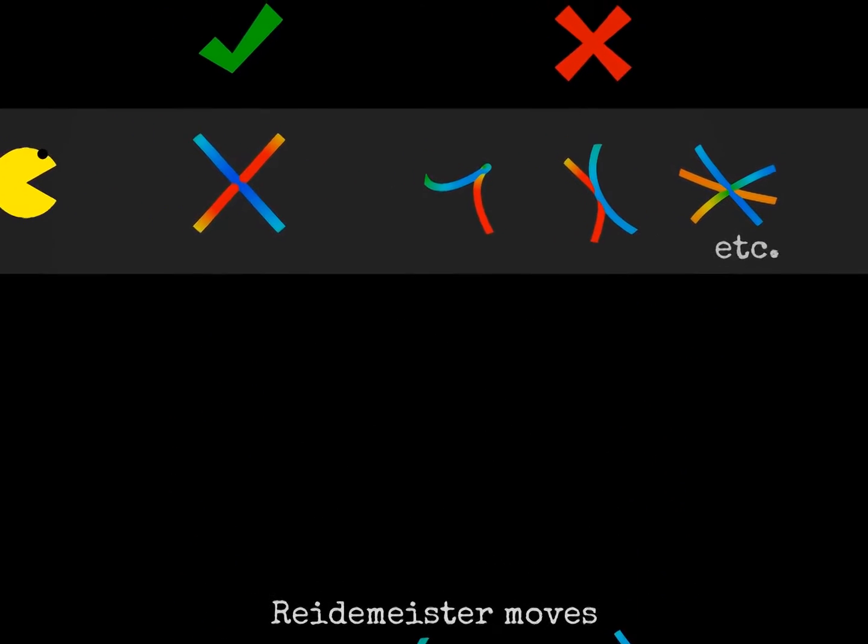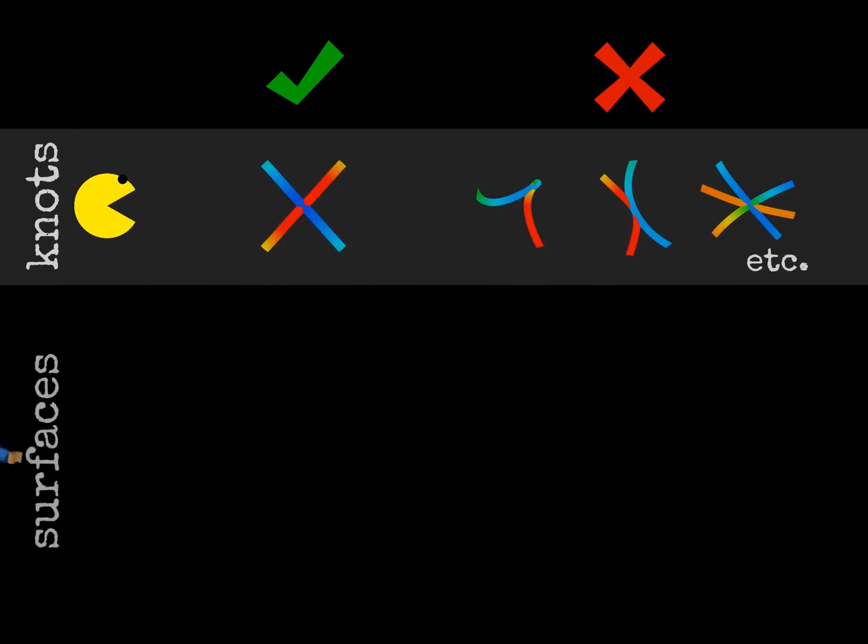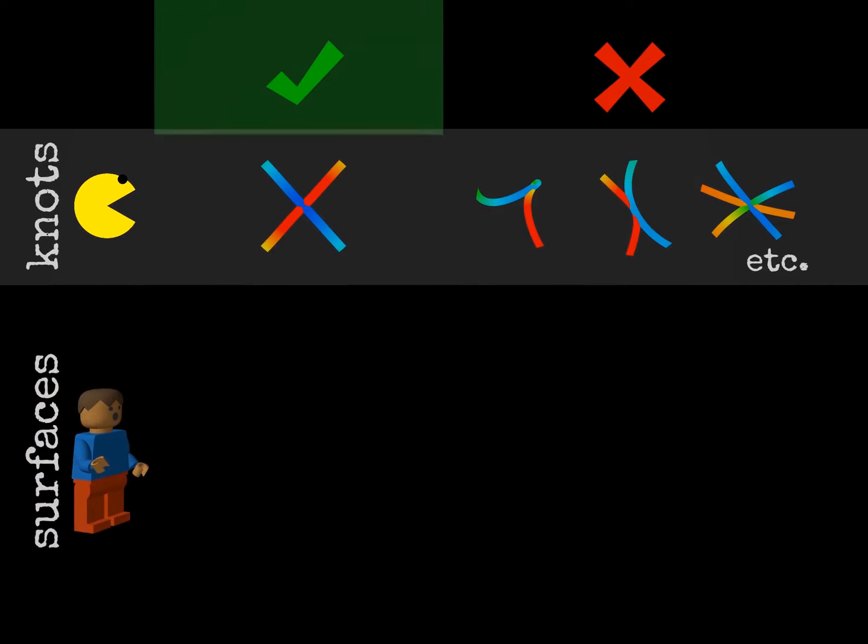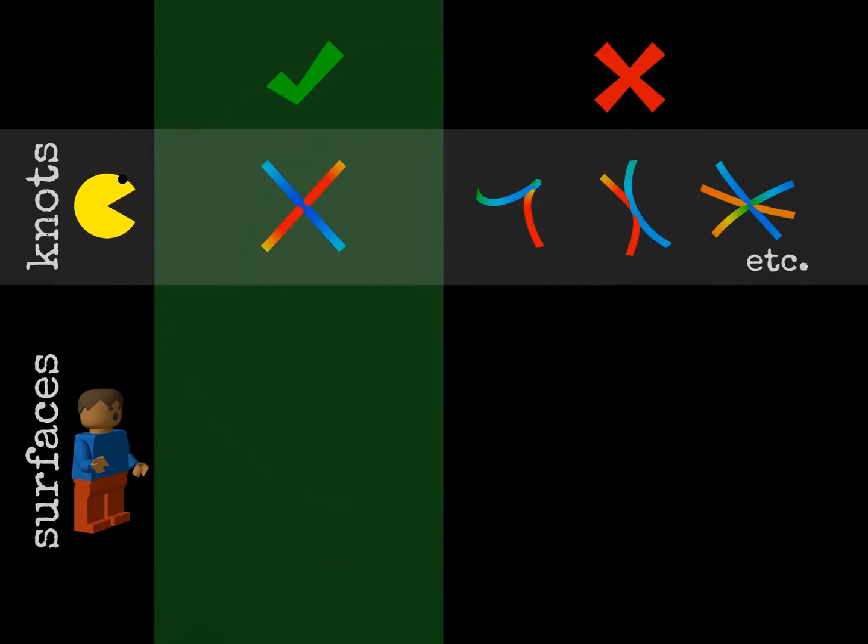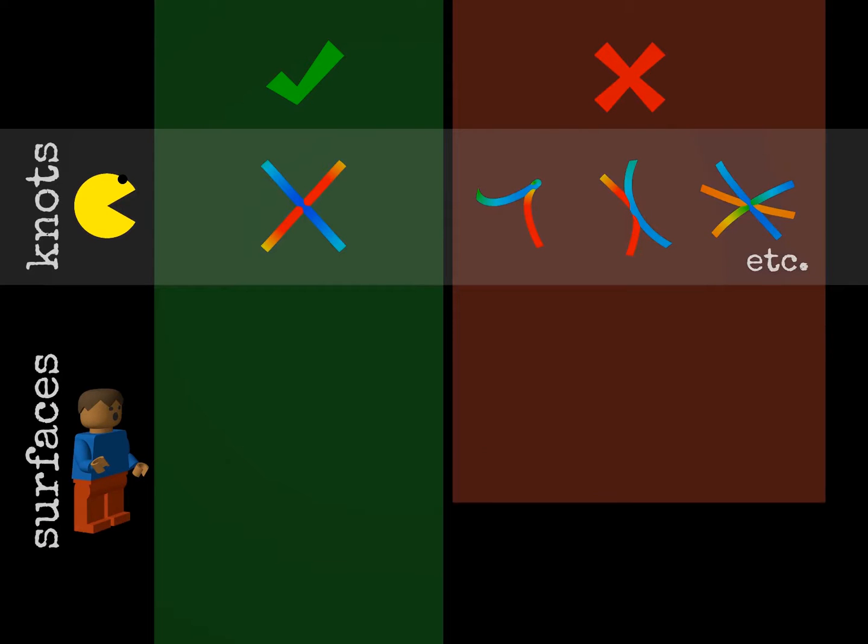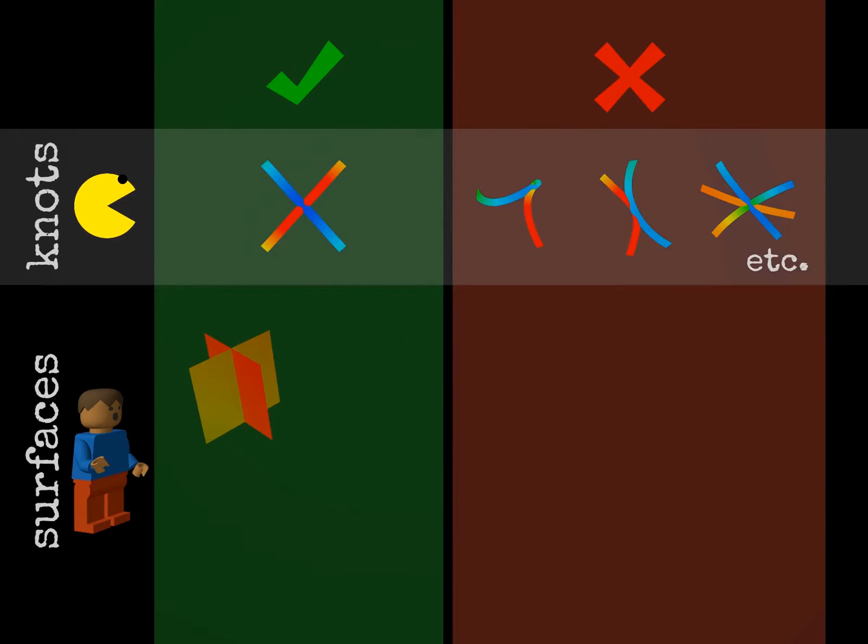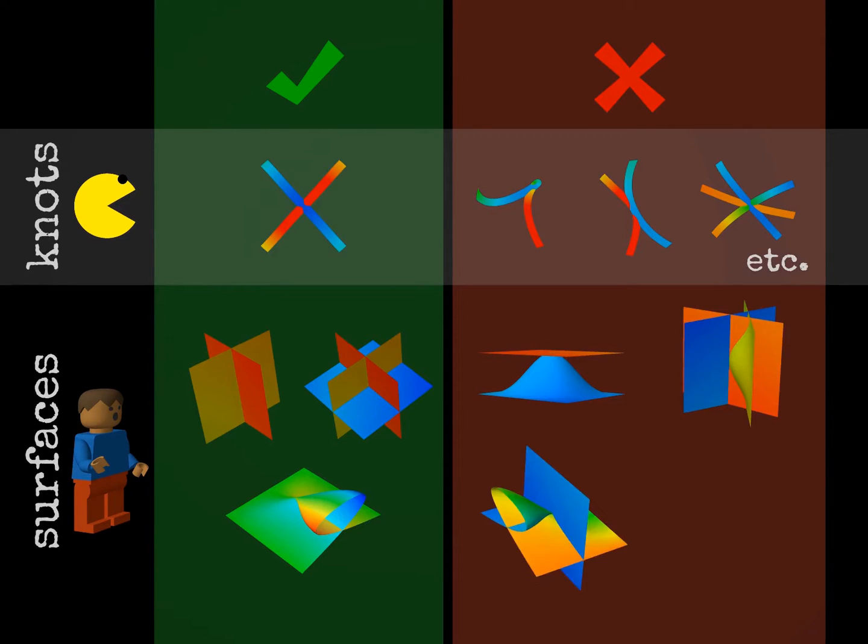A similar situation is true for surfaces. In a surface diagram we need lines of double points, triple points and branch points, and we can avoid all other singularities. Here we show just four of them.